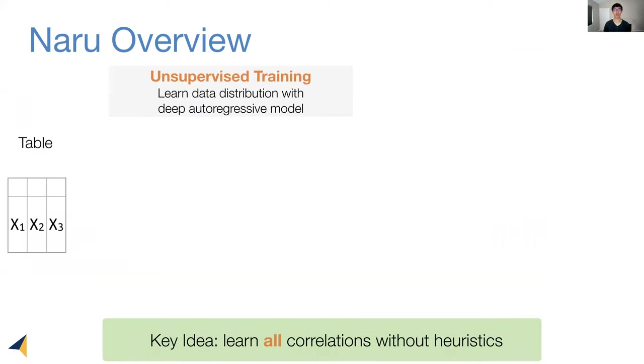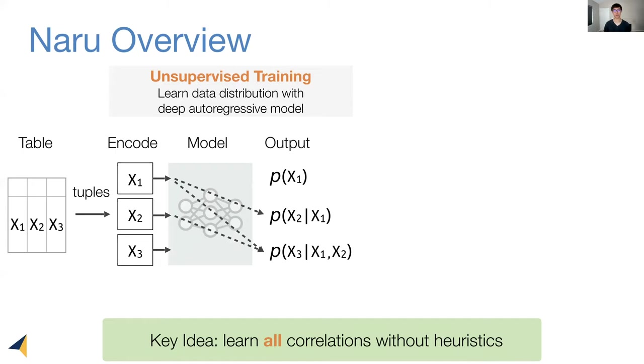Naru performs unsupervised training just like a planar histogram. We read tuples from a table, encode the tuples through suitable vector forms, and pass the encoded tuples to a deep autoregressive model. This model is so-called because the output is a list of conditional distributions, each over one column and conditioned on all prior column values. During training, we perform maximum likelihood estimation, which means the output distributions are made to fit the data better and better.